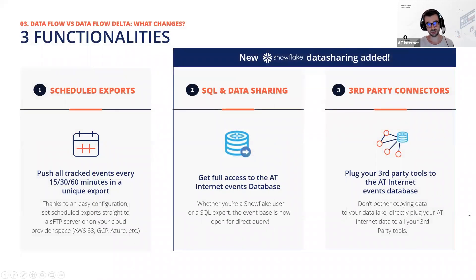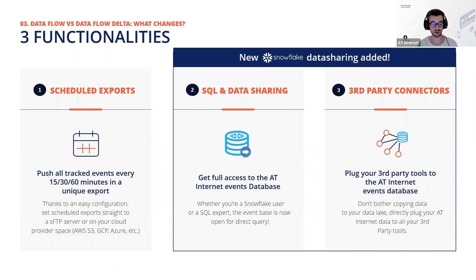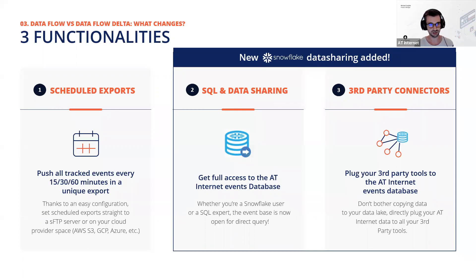On Data Flow Delta you have three main products. The first is the historic one — schedule exports — where you can export your data to SFTP or cloud destinations such as Amazon S3, Google Cloud Platform, and Microsoft Azure (coming soon). You can run these exports every 15, 30, or 60 minutes. Compared to the previous version, 15-minute periodicity is new. There are many other improvements we'll see in detail.